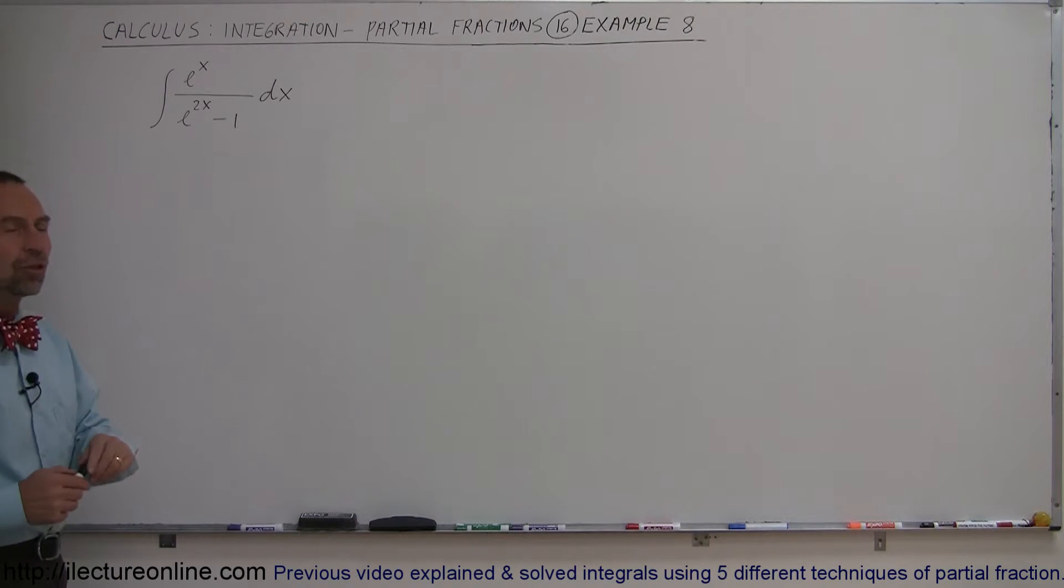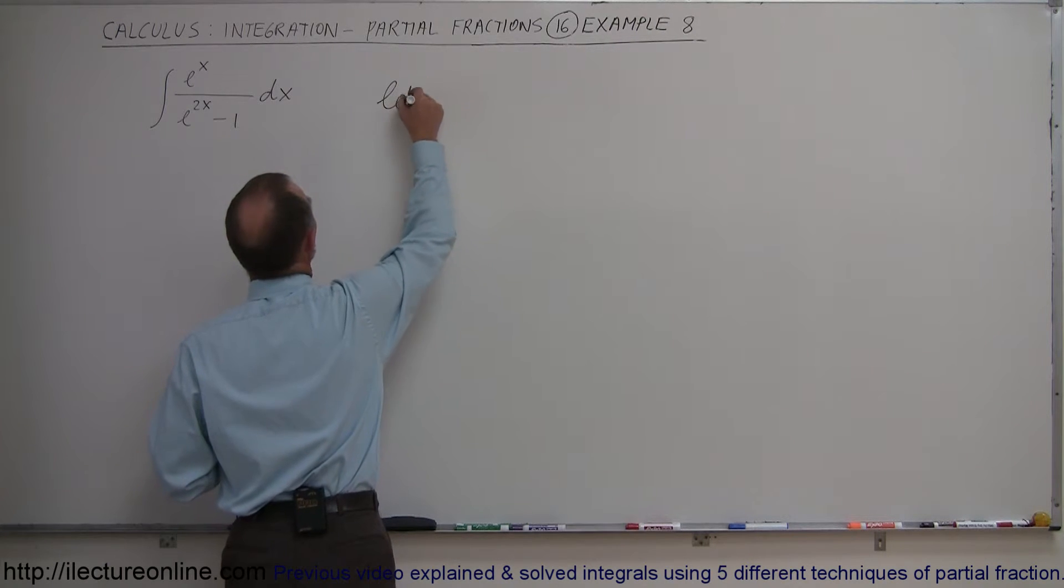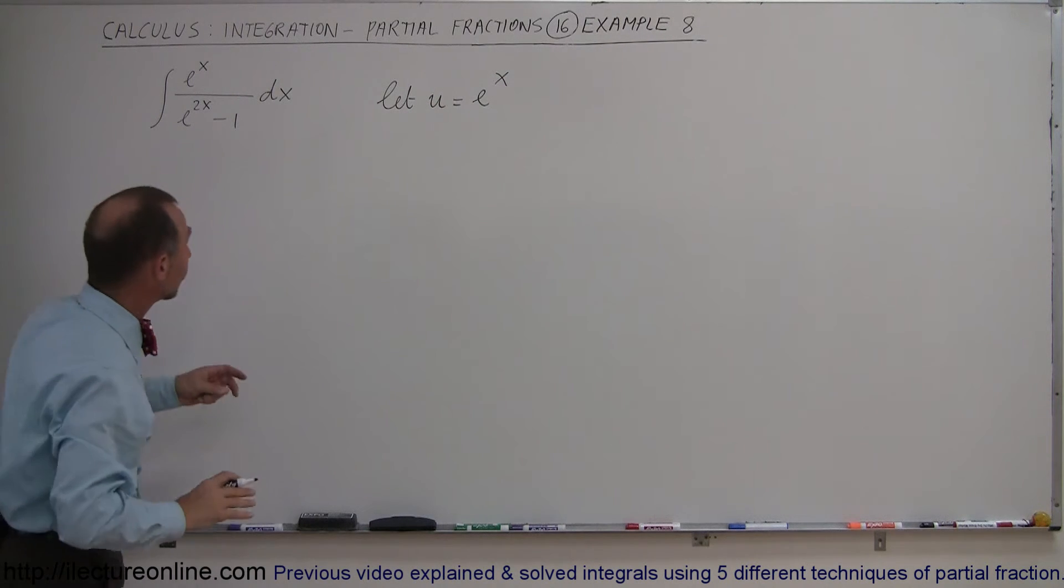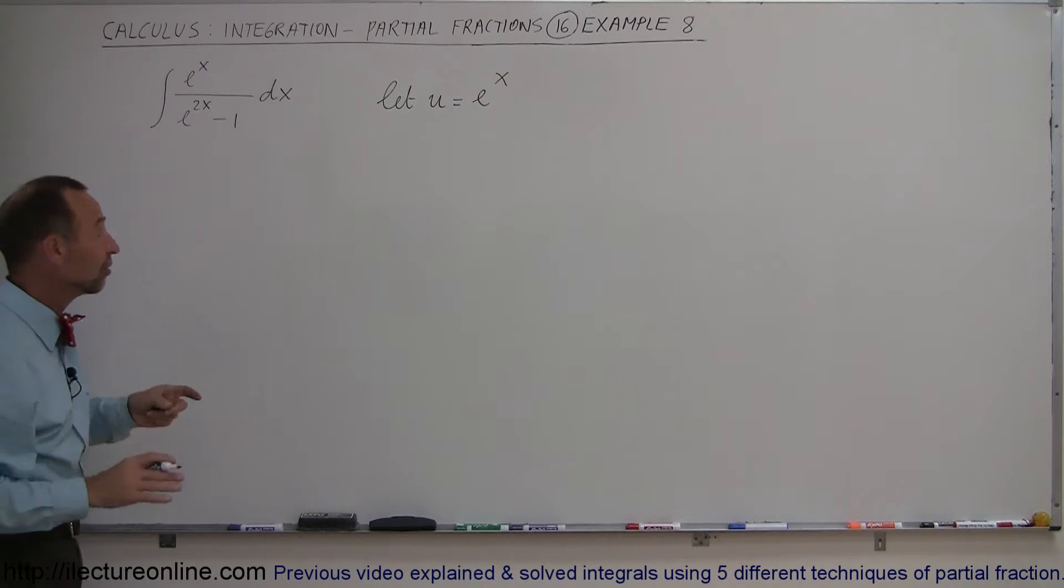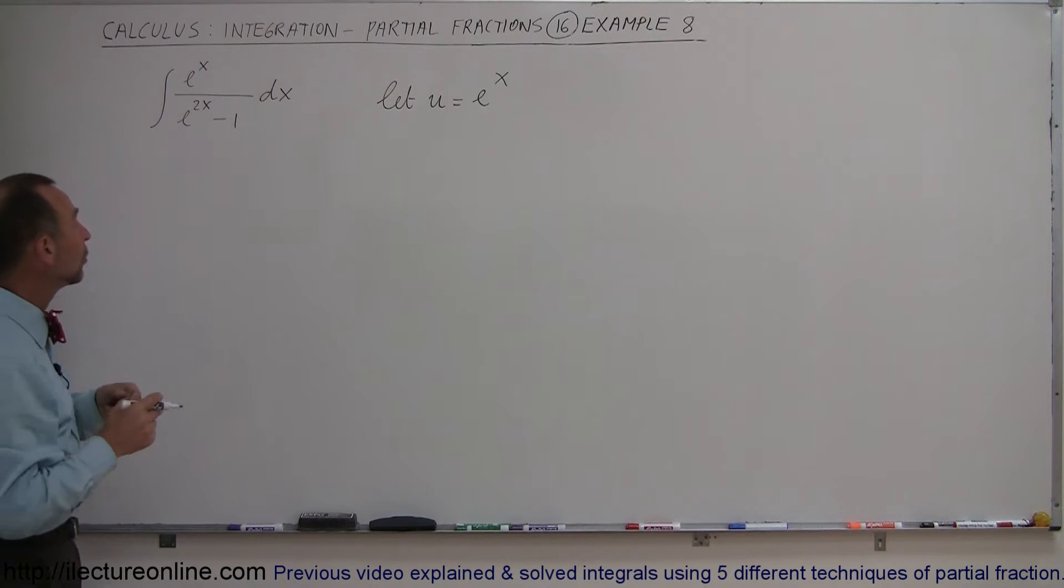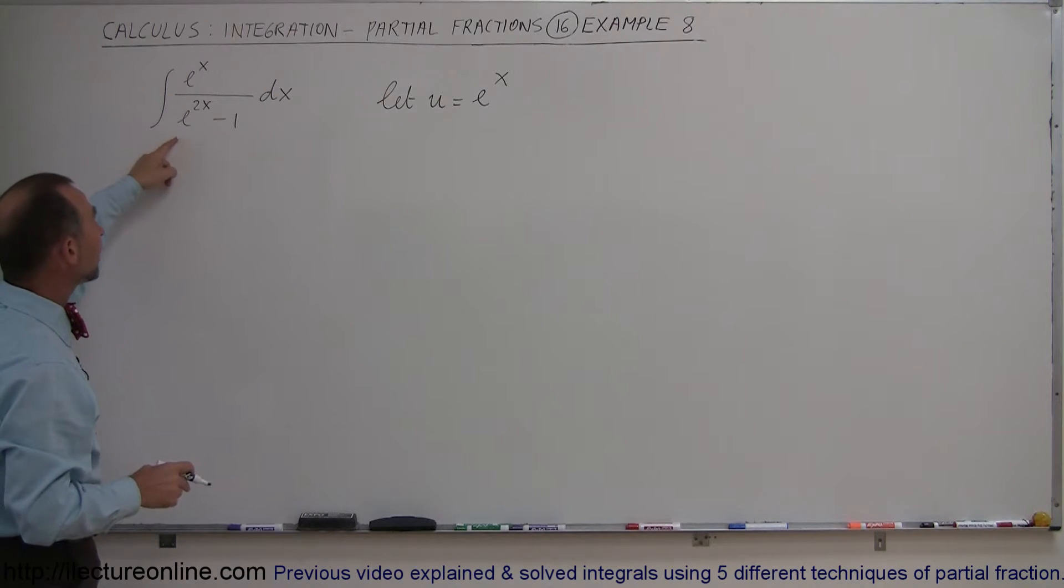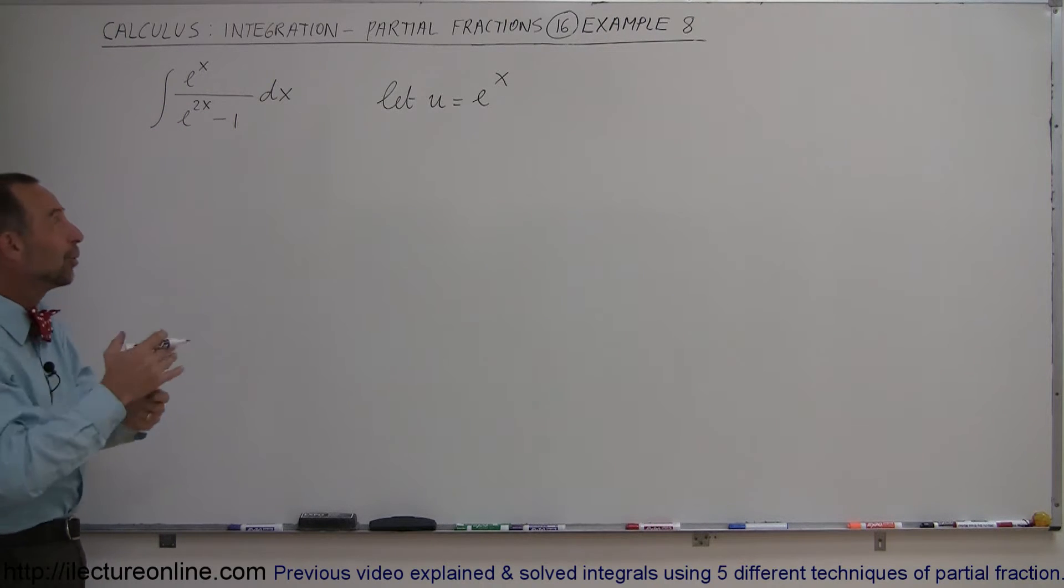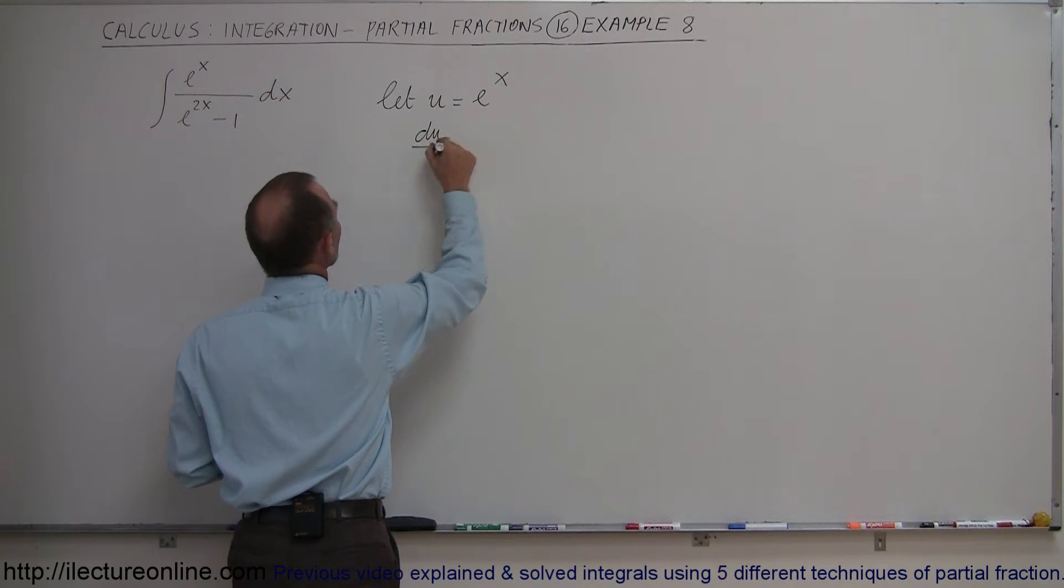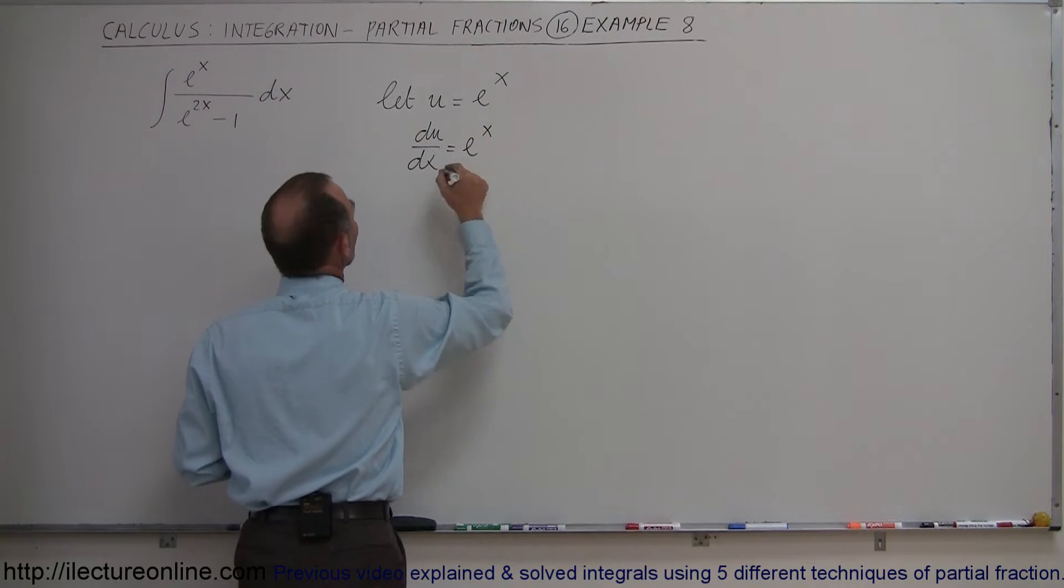If you make a substitution, let u equal e^x. Why would we want to do that? Well, if you try to integrate this as is, you won't be very successful because in the denominator you have e^2x, and the differential would be e^2x dx, but you don't have e^2x in the numerator. So let u = e^x, then du/dx = e^x, and therefore du = e^x dx.